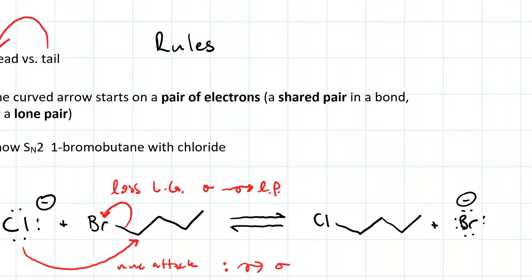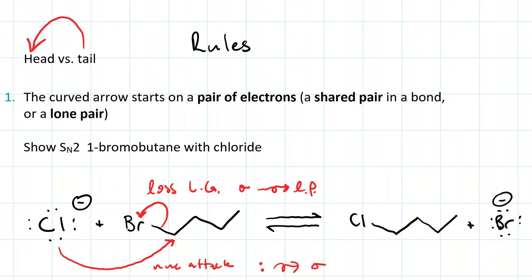Also it never hurts to have all of your lone pairs present. And so you can see that one of the lone pairs on chloride became this sigma bond. And one of the lone pairs on the bromide on the right-hand side came from this sigma bond.